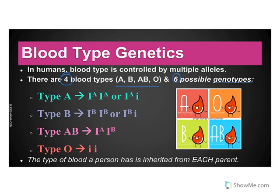Here is what it breaks down into. Type A has homozygous blood type A or heterozygous. Type B, same thing — homozygous or heterozygous for blood type B. Type AB, there's only one, and this is technically codominance because you have an A and a B. And then type O, only one, and this is recessive.